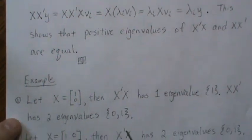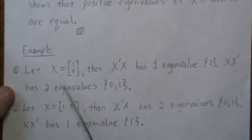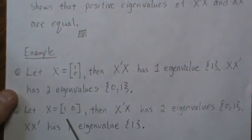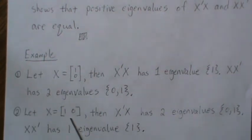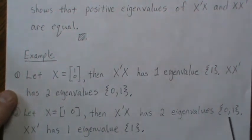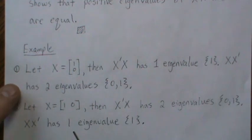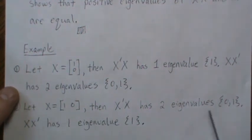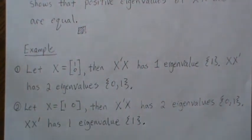So then if we actually let X be the transpose, so X is [1, 0]. So this still has a rank of 1, but it's not full column rank. Then X prime X has two eigenvalues, 0 and 1, and X X prime has one eigenvalue of 1. So this is really just to illustrate that the zero eigenvalues are different between X prime X and X X prime. And really they only differ by multiplicity. In this case, one multiplicity is 0 and the other is 1. But usually it's much more than that.